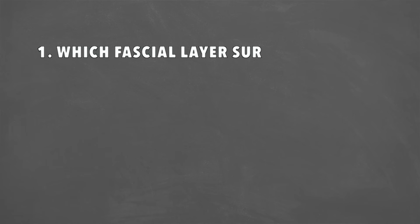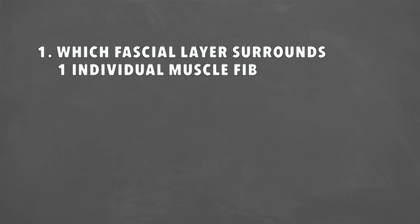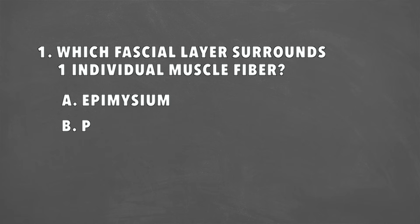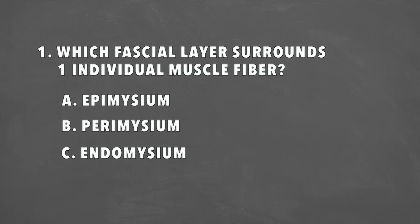Question number one: which fascial layer surrounds one individual muscle fiber? Is it A, epimycium; B, perimycium; or C, endomycium? The answer is C, endomycium. That surrounds one individual fiber.